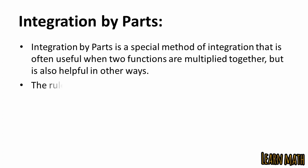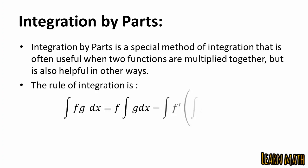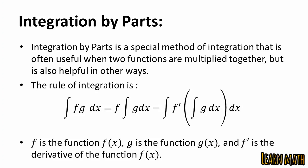The rule of integration by parts is: the integral of f·g dx is equal to the first function f, times the integral of the second function g dx, minus the whole integral of the derivative of the first function f prime and the integral of the second function g dx, all times dx. Here f and g are functions, and f prime is the derivative of f.